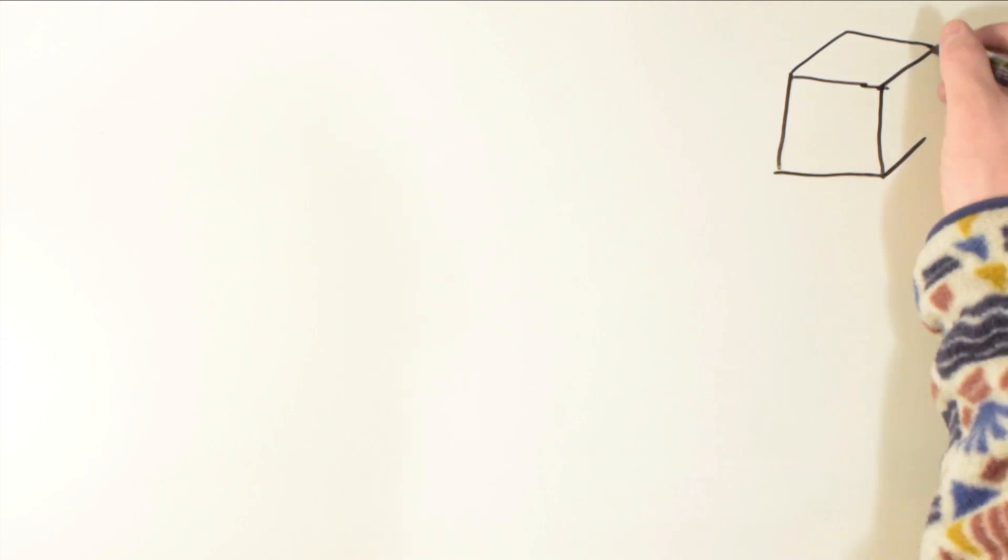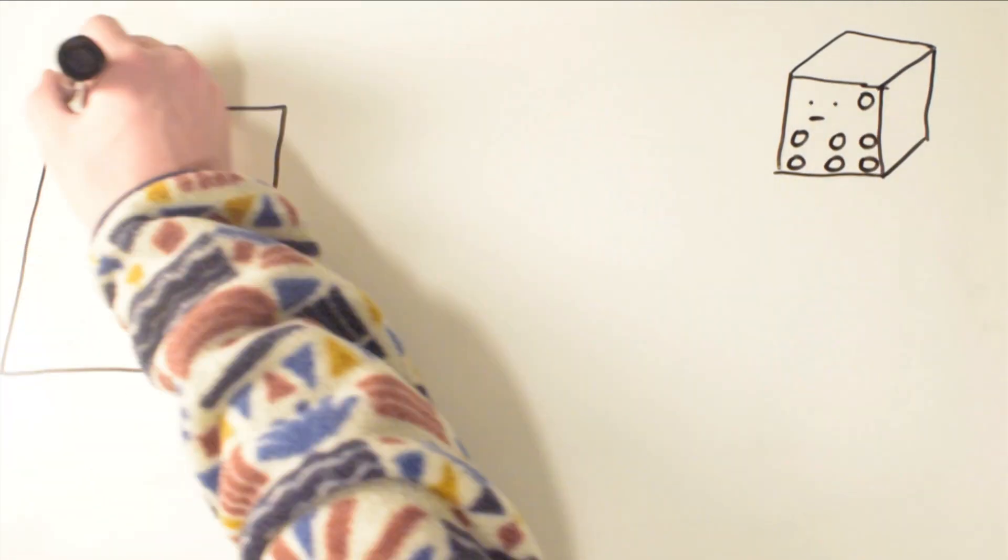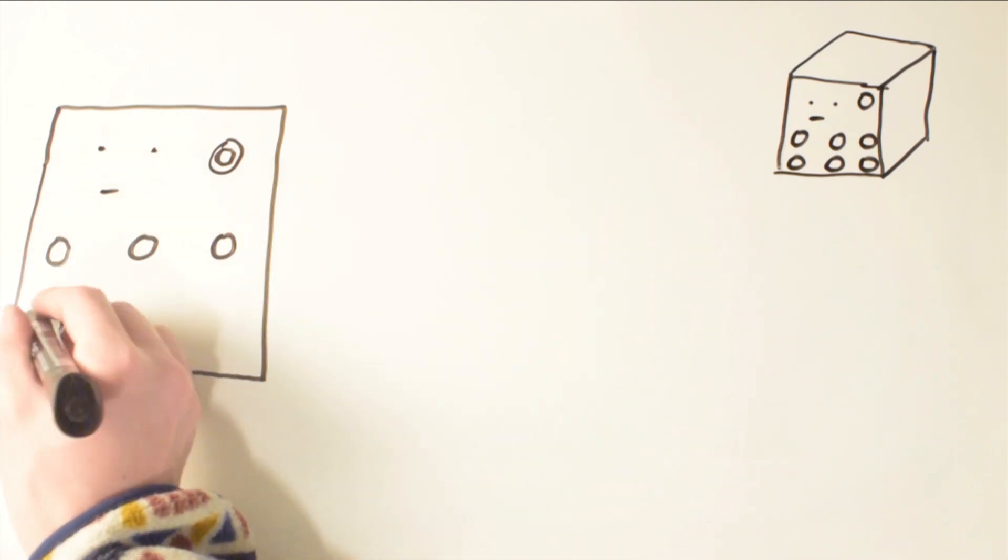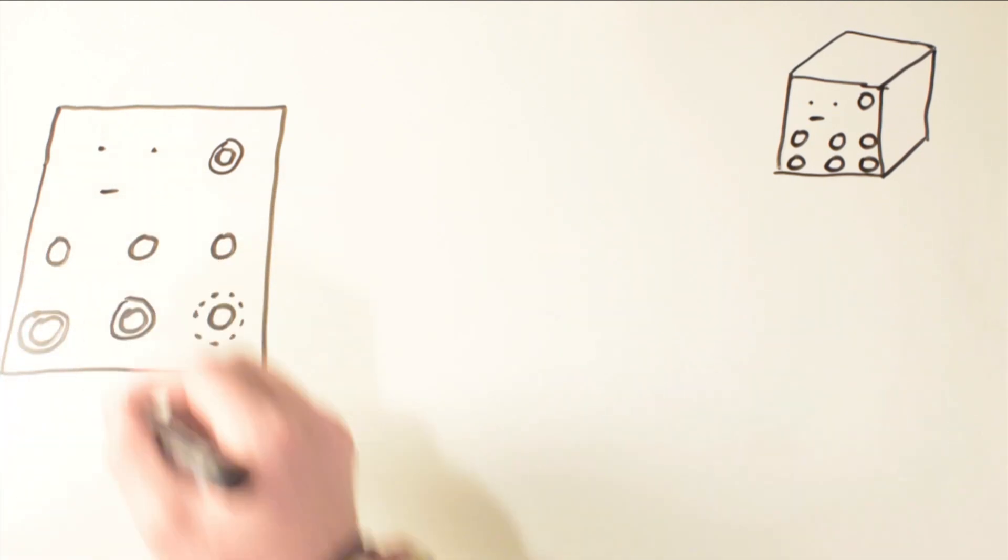Round features are typically written using the diameter symbol, which is a circle with a diagonal line through it. The size of a diameter is then written after this. Radii are also sometimes used, however they are typically reserved for features that aren't closed. These are a capital R followed by the dimension.